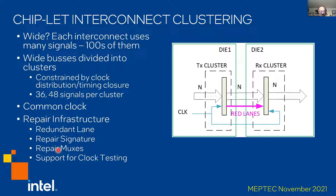In addition to that, the clusters also contain storage for all the repair signatures, so they can be used during power-up. There are repair marks required within the clusters to remove the faulty lane. Finally, there has to be some support for testing the clocks. That is how the whole cluster looks — a whole part of the DFT infrastructure.